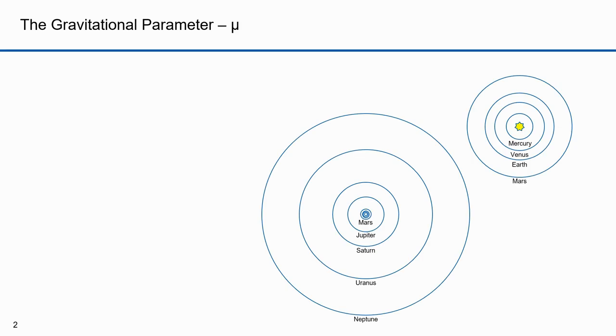Welcome to Orbital Dynamics, Part 21. In this part, I'm going to talk about the gravitational parameter. In Kepler's orbital dynamics, he was looking at systems with a very large central body, like our solar system. In a system like that, the central body dominates.